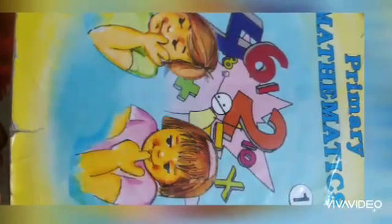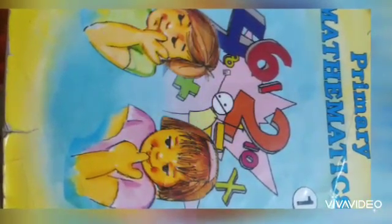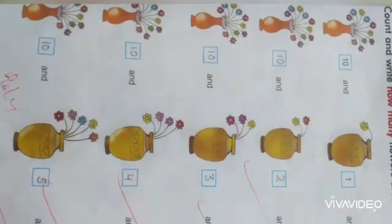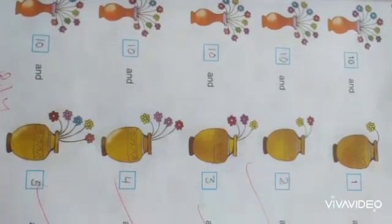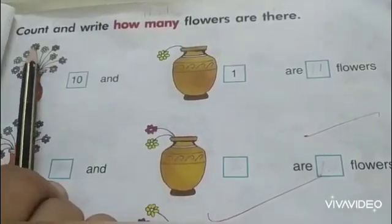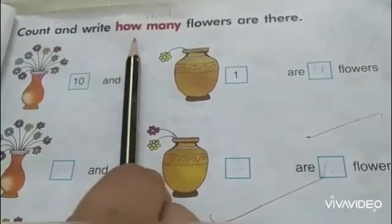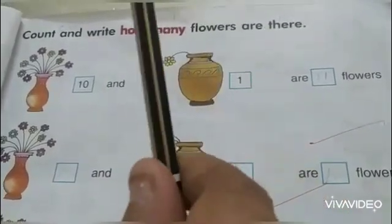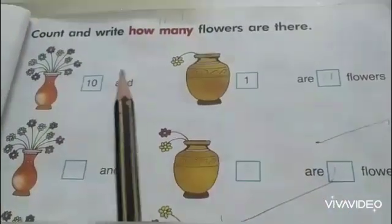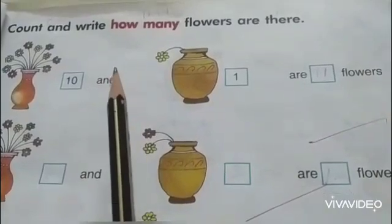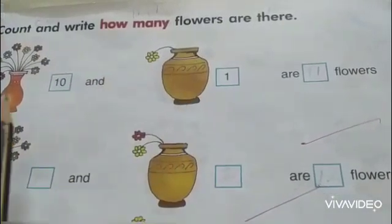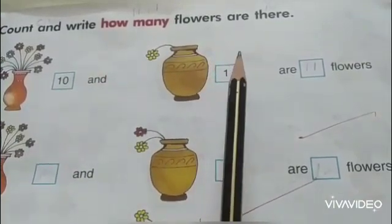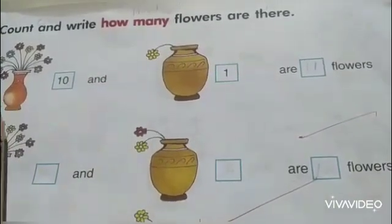Students, today we will be doing page number 19 and 20 from my primary maths book. Count and write how many flowers are there. In this exercise we will count and write about how many flowers are there in both of the pots. Let's begin with the first one.